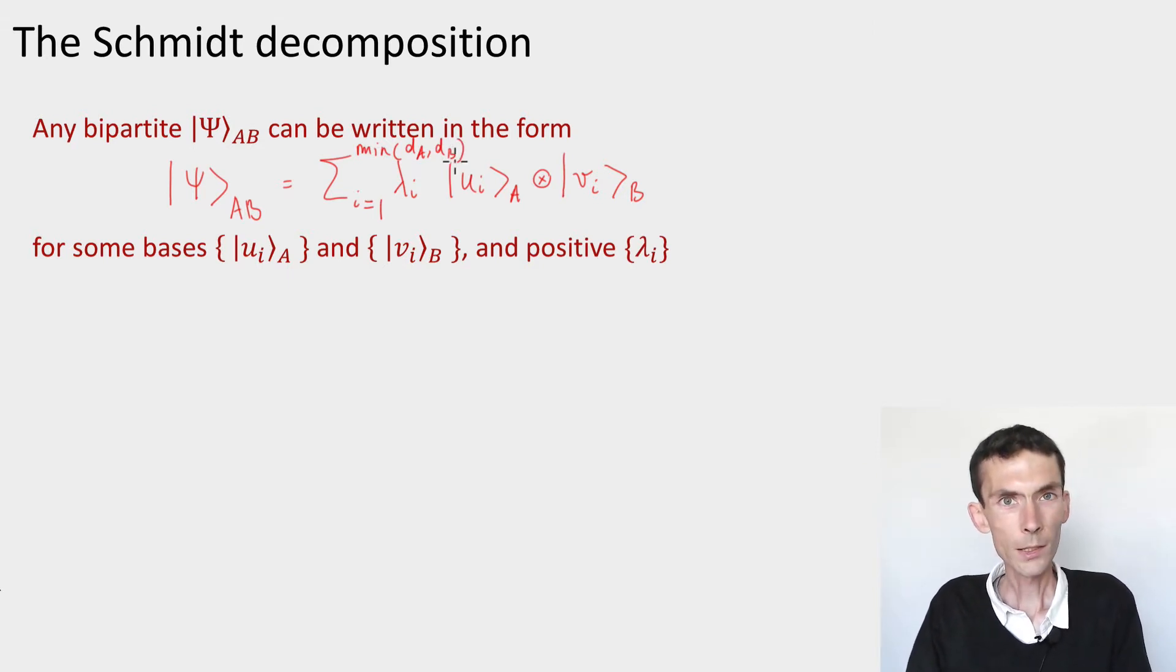So what are these lambdas, u's and v's? First of all, the u vectors, ui on A system and vi on the B system, these are an orthonormal set of vectors, each one is a basis, and they're called the Schmidt vectors.